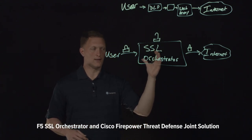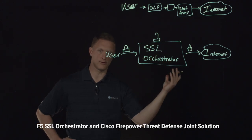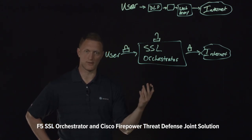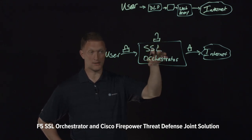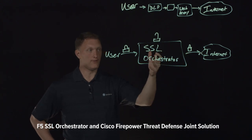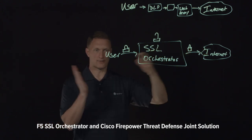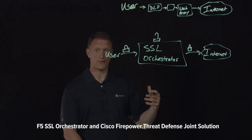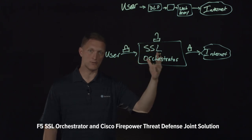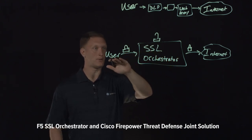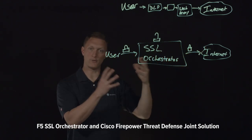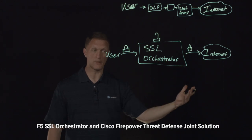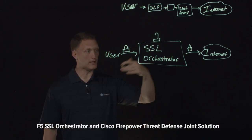For traffic like bank websites, government institutions, or healthcare information, you don't need to decrypt it due to privacy regulations or governance laws. In that case, based on classification, the SSL Orchestrator just passes that traffic straight through as a proxy, saving time and effort. The SSL Orchestrator can be deployed as an explicit or transparent proxy, inline to your traffic, and supports both layer two and layer three deployment modes.